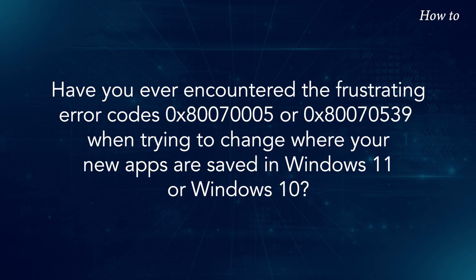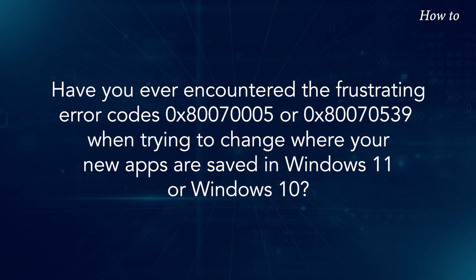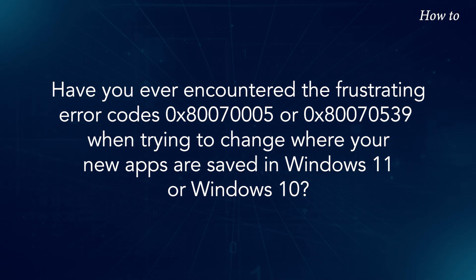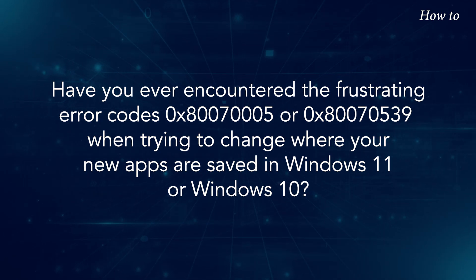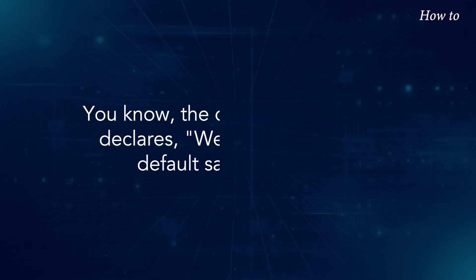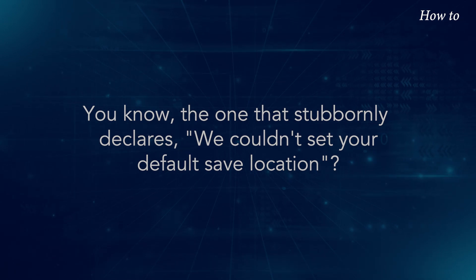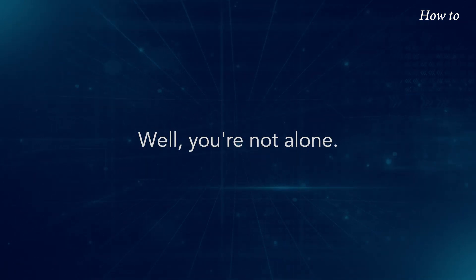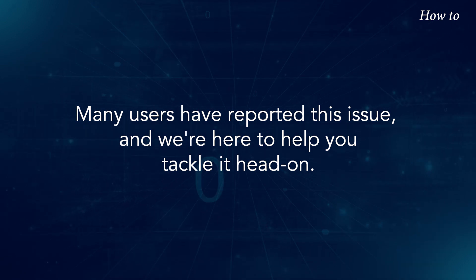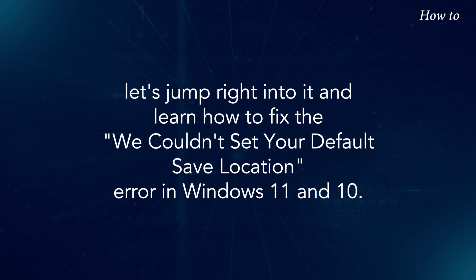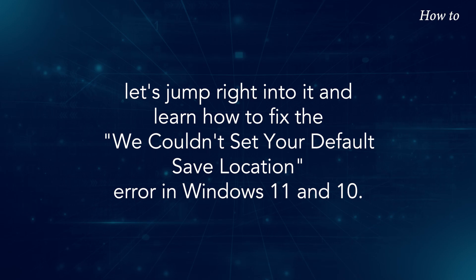Have you ever encountered the frustrating error codes 0x80070005 or 0x80070539 when trying to change where your new apps are saved in Windows 11 or Windows 10? You know the one that stubbornly declares, We Couldn't Set Your Default Save Location. Well, you're not alone. Many users have reported this issue, and we're here to help you tackle it head-on. Let's jump right into it and learn how to fix this error in Windows 11 and 10.